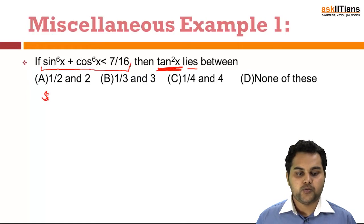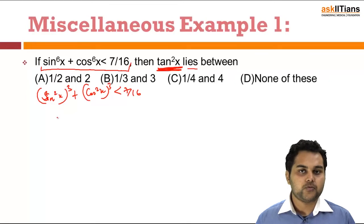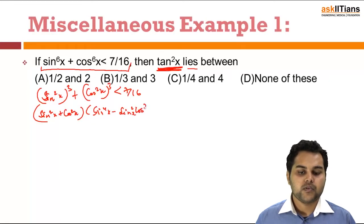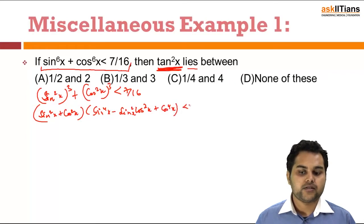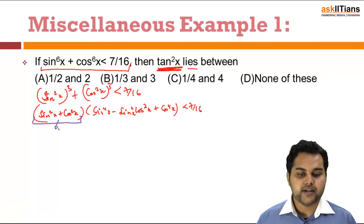I can write this as a³ + b³, that is (sin²x)³ + (cos²x)³ < 7/16. Now a³ + b³ can be written as (a + b)(a² - ab + b²), giving (sin²x + cos²x)(sin⁴x - sin²x·cos²x + cos⁴x) < 7/16. The first factor comes out to be 1 as an identity.